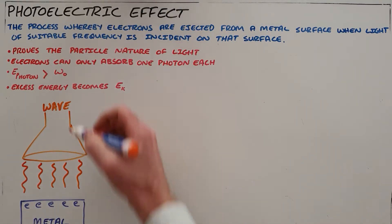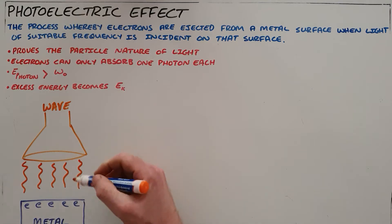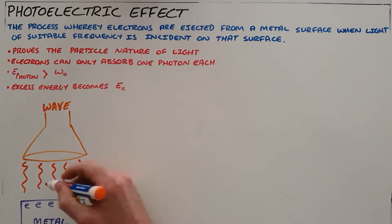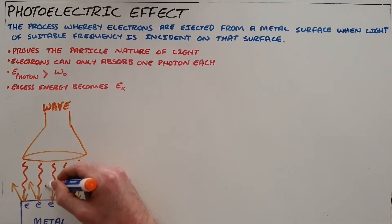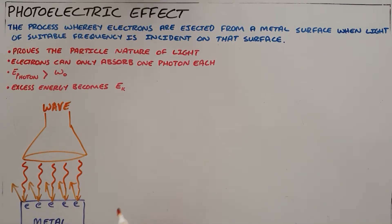Now what that would suggest is that if light is shone on a surface for long enough, every single electron would be able to absorb enough energy to escape from the surface of that metal, which would mean that after a long enough period of time, all metals would be left without any electrons.